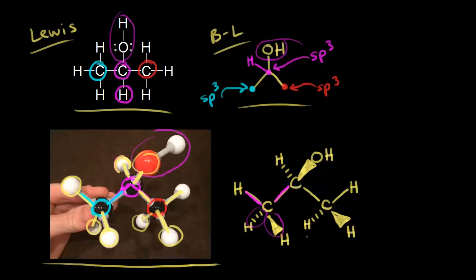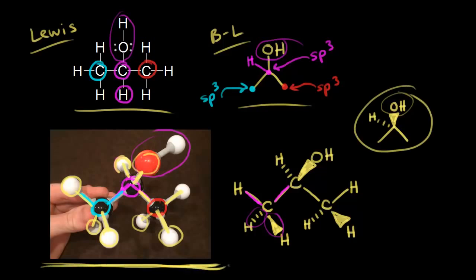Usually you don't see the hydrogens drawn in on these structures, so we could simplify our three-dimensional bond line structure. We could just show an OH coming out at us in space with a wedge, which implies there's a hydrogen going away from you in space. Three-dimensional bond line structures are an important skill to visualize. Model sets help, so you should definitely purchase a model set at this point in your study of organic chemistry, because it's going to help you a lot later in the course.